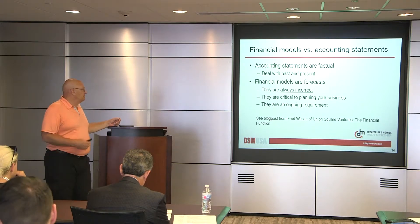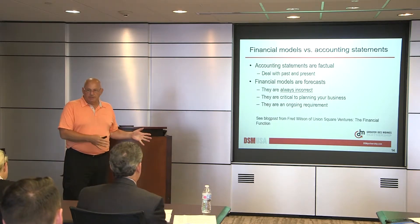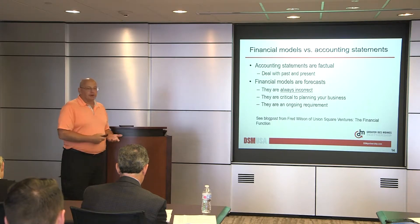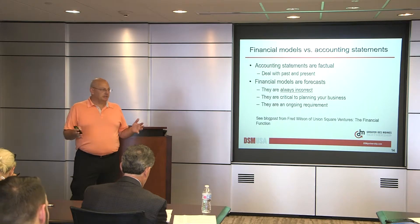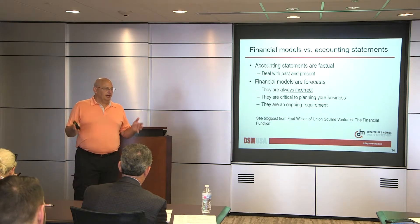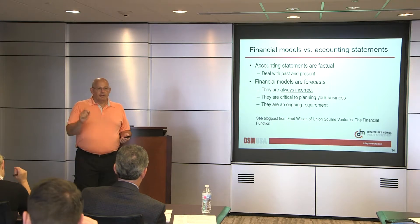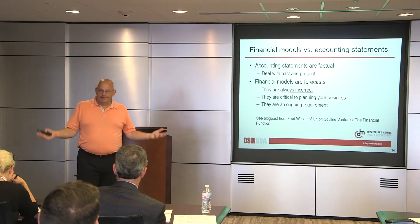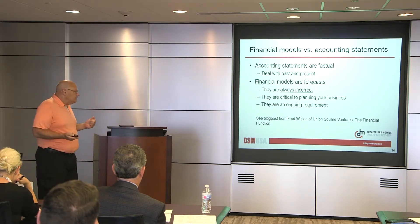Accounting statements are fact. They deal with the past and the present — they're a history document. Financial models are forecasts — they're always wrong. Go in knowing they're wrong. They're critical to planning. For example, Christina planning an expansion or a new product line will make a detailed forecast of its impact, knowing it's probably wrong, but really challenging herself on all her assumptions to say 'this is why I think this is where the revenue should come out.'